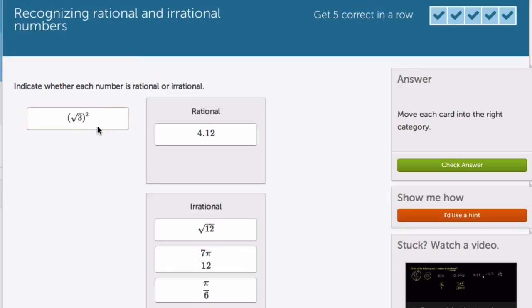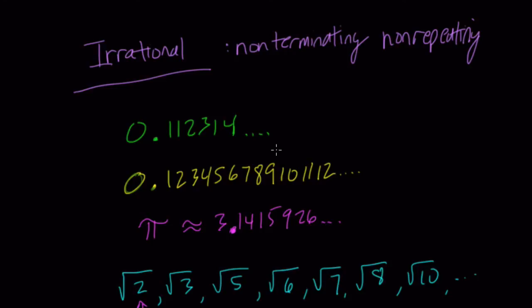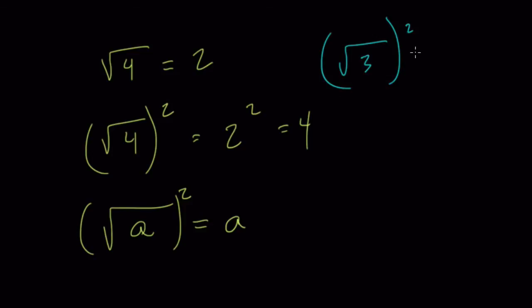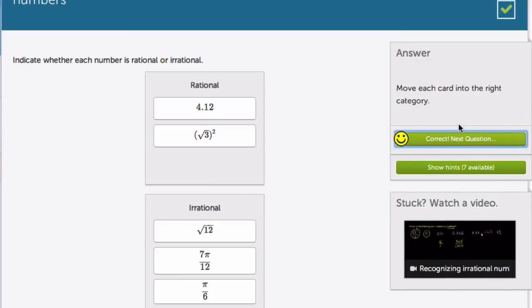(√3)² is an interesting case. √3 is irrational, but if you multiply it by itself, you get a rational number. This is a special case because you square the square root. The square root of any number a, squared, is just a. The square root of 4 squared equals 4. Squaring and square roots are inverse operations. So that's a way to get out of the world of irrational numbers—by squaring the square root.